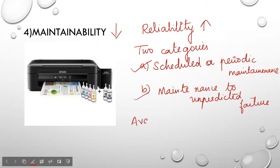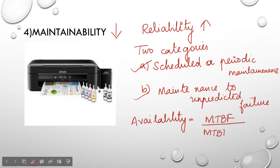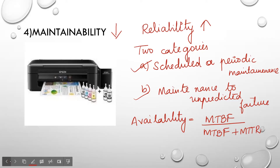Based on these two things, there is a formula for availability: availability is given as MTBF divided by (MTBF plus MTTR). MTBF is mean time between failures and MTTR is mean time to repair. This formula tells you the availability of your system when maintenance comes into account.